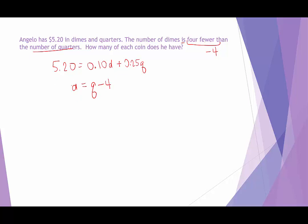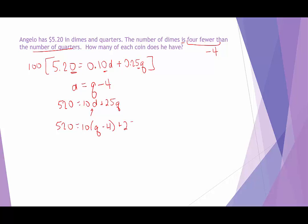This is a good candidate for substitution. I'll multiply the value equation by 100 to clear the decimals, since the furthest decimal place is hundredths: 10D plus 25Q equals 520. Anywhere I see D, I replace it with Q minus 4: 520 equals 10 times (Q minus 4) plus 25Q. Distributing gives 10Q minus 40 plus 25Q.